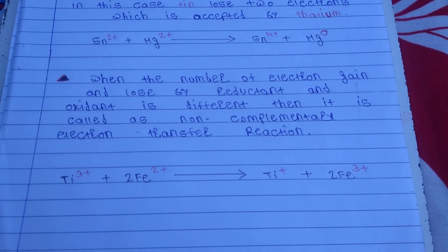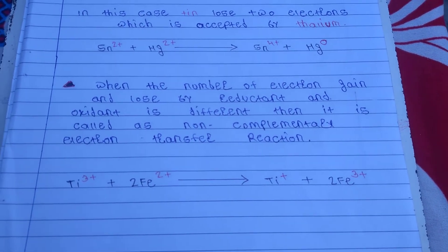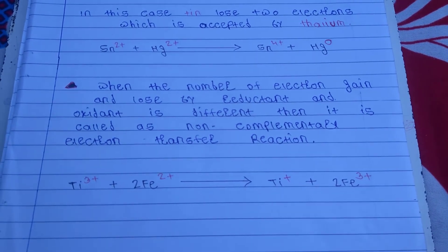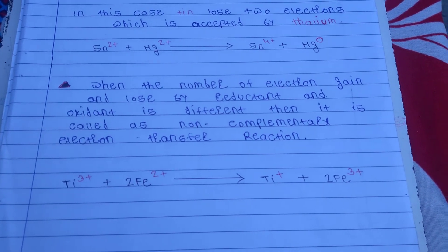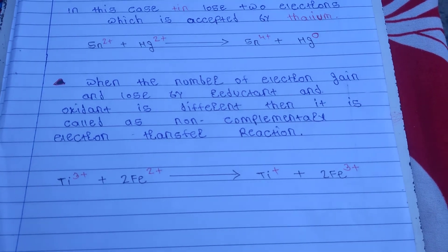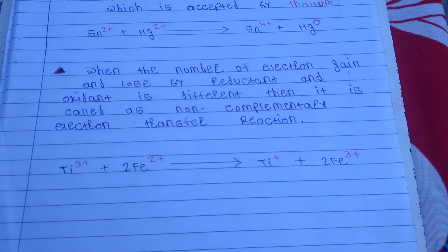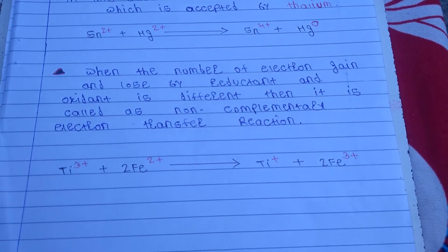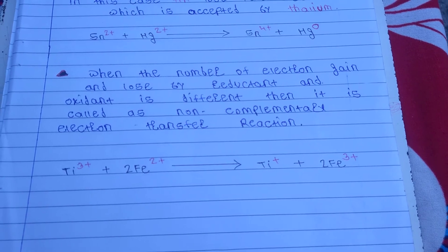The second type is the non-complementary electron transfer reaction. Definition: when the number of electrons gained and lost by the reductant and the oxidant is different, then it is called a non-complementary electron transfer reaction. For example, Tl³⁺ plus twice Fe²⁺ gets converted into Tl⁺ plus 2 Fe³⁺.